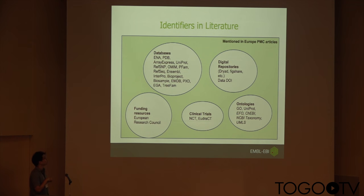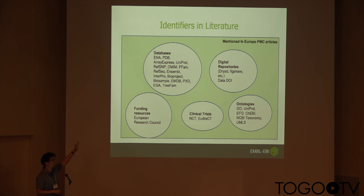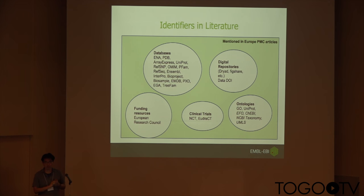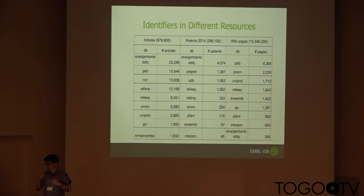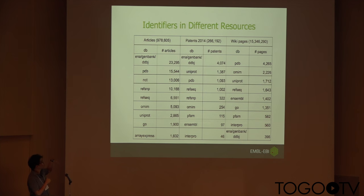This slide shows what kind of identifiers can be mentioned in full-text articles. You can see categories like databases, digital repositories like Dryad, or clinical trials. We are also mining grant IDs for the European Research Council, which is one project recently finished. Not only full-text articles — you can also get those accession numbers across different resources like articles, patents, and even reference pages. Depending on which resource, the most frequent accession type is slightly different.